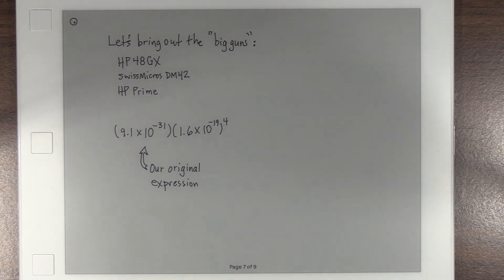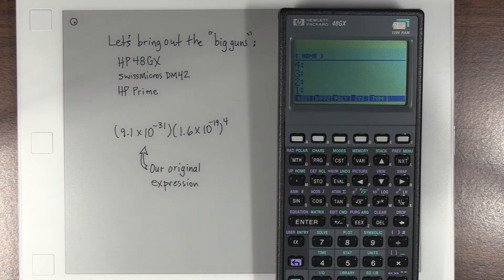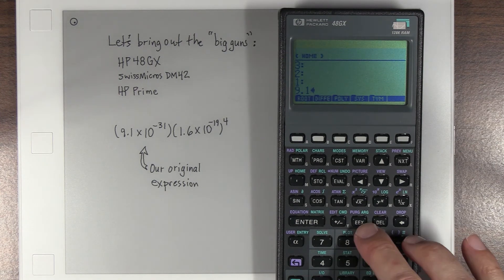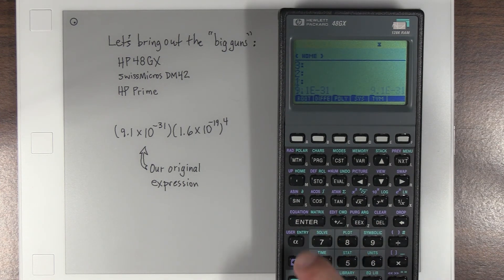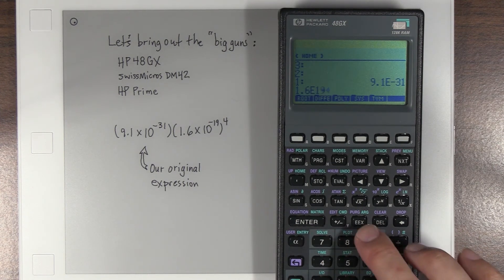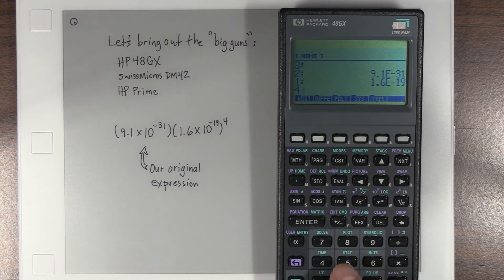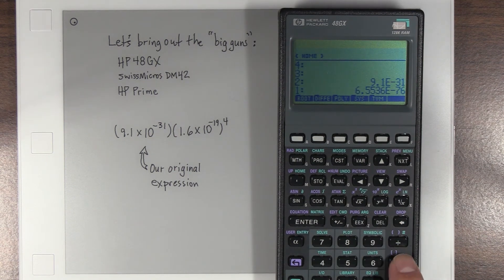Let's bring out the big guns, all right? So let's go back in time first. HP48GX here. 9.1 E to the 31 minus, and we've got to do 1.6 E to the 19 minus, and then we're going to take it to the fourth power. So we do that, and we hit this button, and now we've got to multiply those together. Boom. 5.963776 times 10 to the negative 106. Kudos, 48GX.